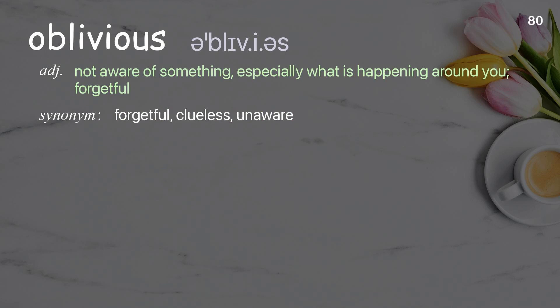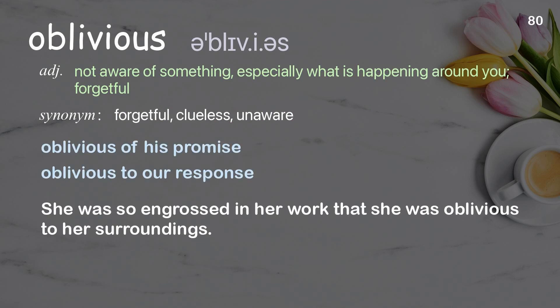Oblivious: not aware of something, especially what is happening around you; forgetful. Examples: oblivious of his promise, oblivious to our response. She was so engrossed in her work that she was oblivious to her surroundings.